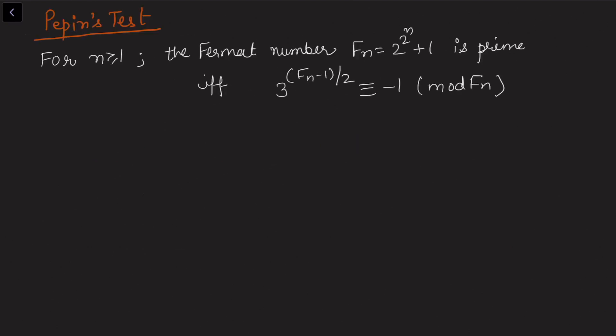Pepin's test says: for n ≥ 1, the Fermat number Fn is prime if and only if 3^((Fn-1)/2) ≡ -1 (mod Fn). Now to see this, let's take an example.